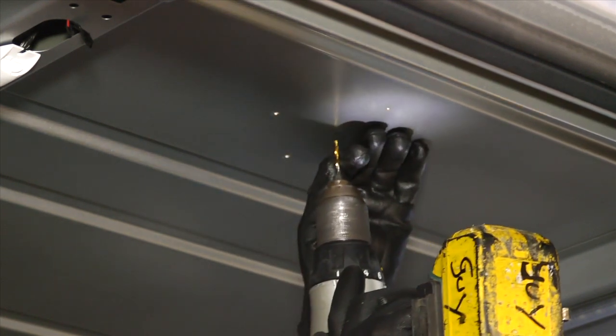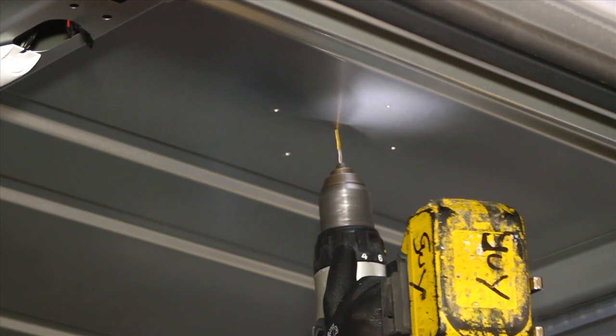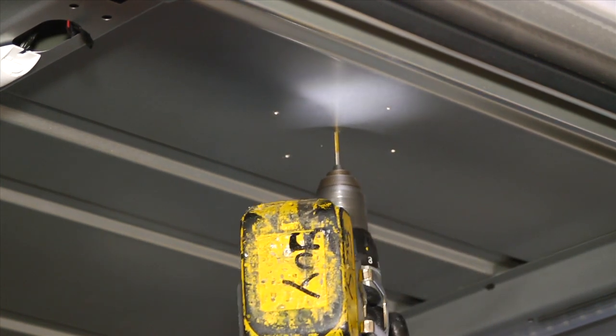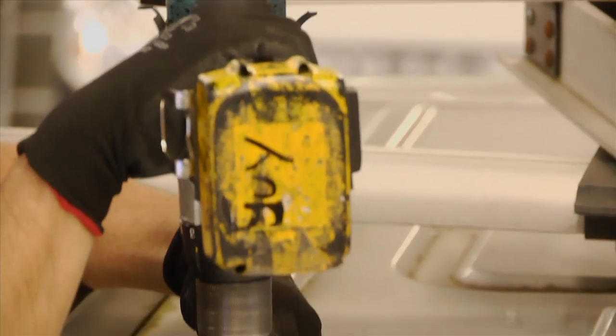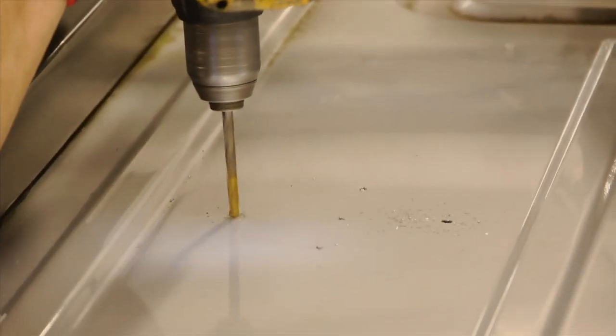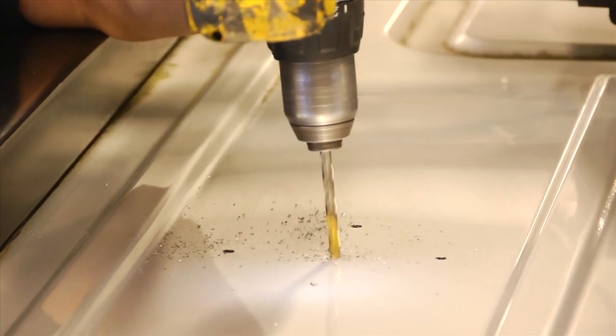Using a 3mm drill bit, drill five pilot holes in the roof of the vehicle. Next, open up the four fixing holes with a drill fitted with the 5mm drill bit. Finally, open up the center hole using a 6.5mm drill bit.